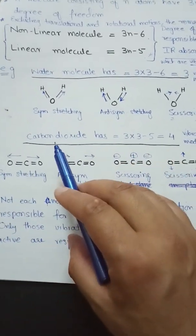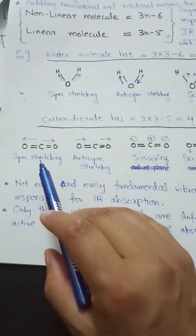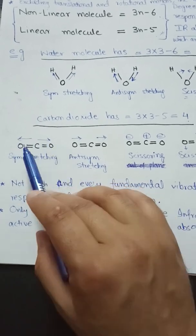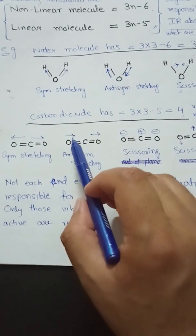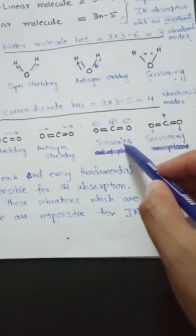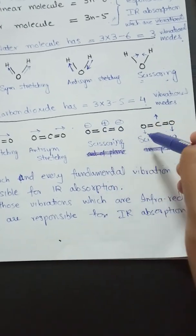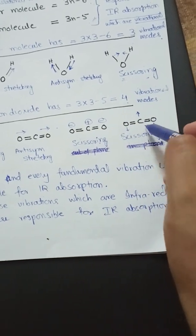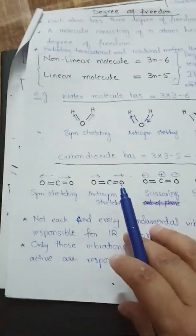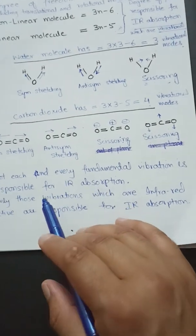For a linear molecule like carbon dioxide, it has four vibrational modes. These are: symmetric stretching — both atoms stretch in the same direction; anti-symmetric stretching — one oxygen moves toward the carbon while the other moves away; and two scissoring vibrations — in one, the oxygen atoms go backward while the carbon comes forward, changing the angle; and the same motion in the perpendicular direction. These two scissoring vibrations appear in almost the same IR region.